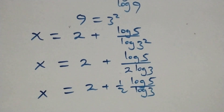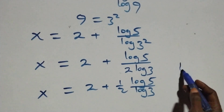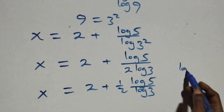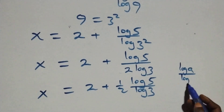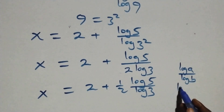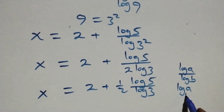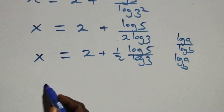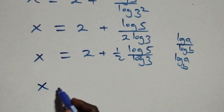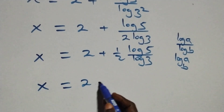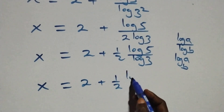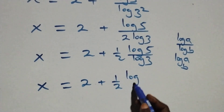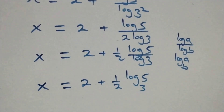We apply the change of base formula here: when we have log a over log b, this is the same thing as log a to base b. So here we have x equals 2 plus 1 over 2 times log 5 base 3.